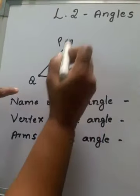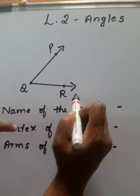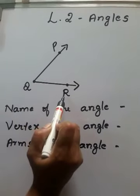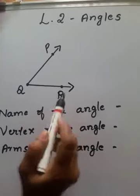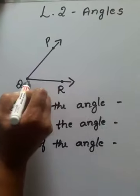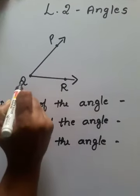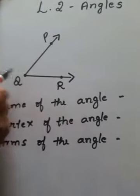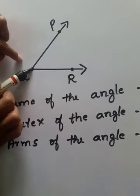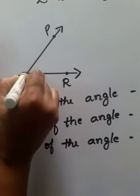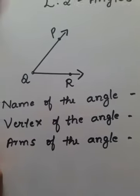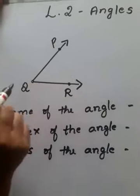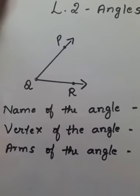Now look at this angle. These are the two arms of an angle — ray QP and ray QR. When these two rays come and meet in a single point Q, that point Q is called the vertex of an angle. Vertex means the point where two rays meet.